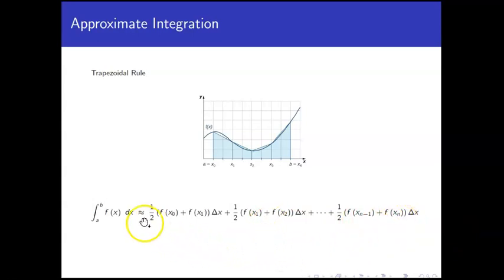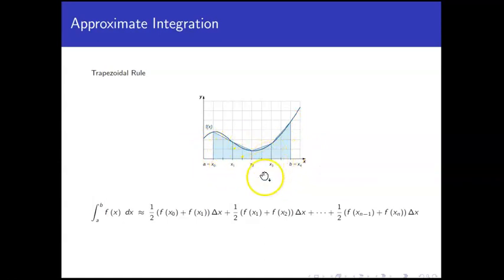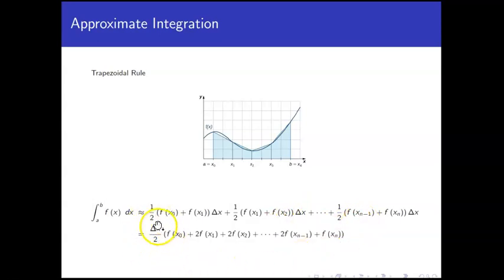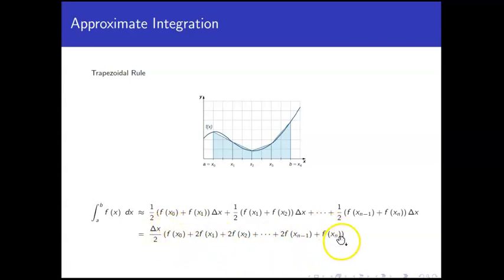For the general trapezoidal rule formula, each trapezoid contributes (1/2) · delta x · (f(xᵢ₋₁) + f(xᵢ)). Factoring out delta x / 2 and noting that each interior point is shared by two trapezoids, the intermediate function values appear twice. The result is delta x over 2 times f(x₀) + 2f(x₁) + 2f(x₂) + ... + 2f(xₙ₋₁) + f(xₙ). The coefficient pattern is 1, 2, 2, 2, ..., 2, 1.